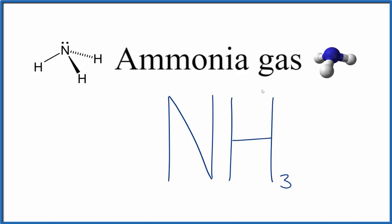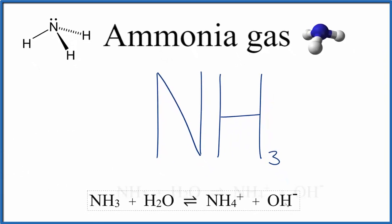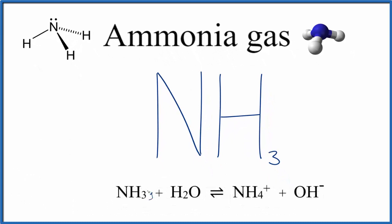If we put ammonia gas in water — say we bubble it through water — it will dissolve, it'll become aqueous, and we'll set up this equilibrium here. We'd have our ammonia gas, put a little g, liquid water, and then we have this aqueous ammonium ion — that NH4 plus — and an aqueous hydroxide ion. But this is an equilibrium here.